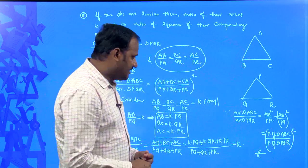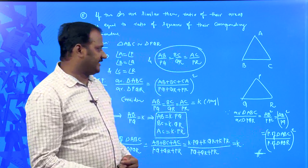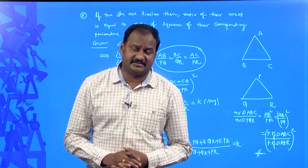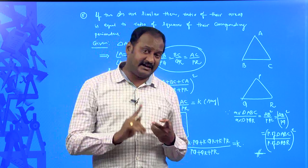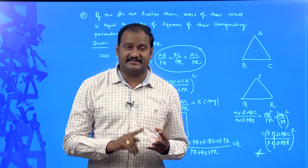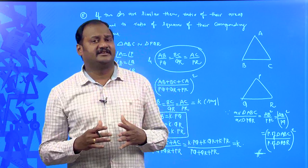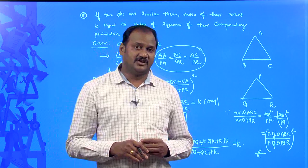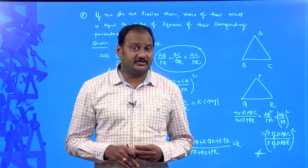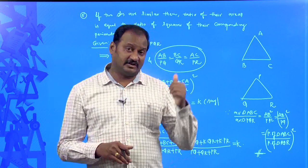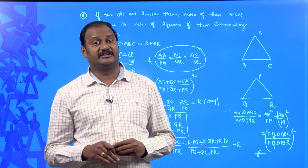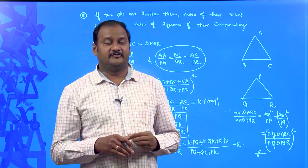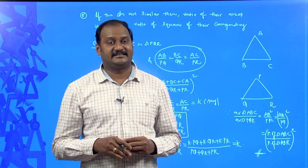Therefore, area of triangle ABC by area of triangle PQR is equal to the square of the ratio of perimeter of triangle ABC to perimeter of triangle PQR. This proves the relationship between areas of similar triangles and their corresponding sides, altitudes, medians, angular bisectors, and perimeters. This is an important topic, as the concept of angular bisectors is also used in coordinate geometry in higher classes to derive the formula for the incenter and excenter of a triangle.